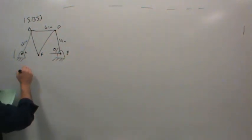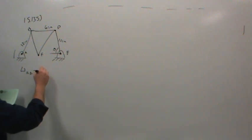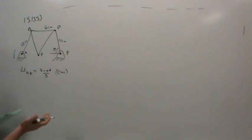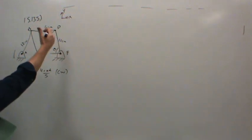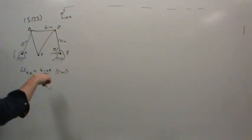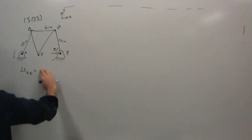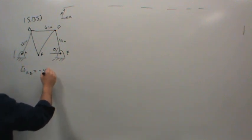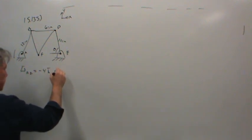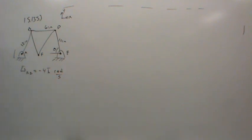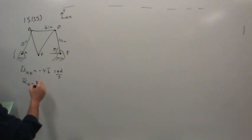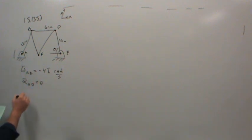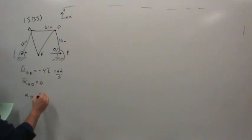We were told that the angular speed of body AB is 4 radians per second clockwise. We could write this as a vector: if we have a regular coordinate system with X into Y giving Z out, and this is a clockwise rotation, that means Z into the board. So we write this as negative 4k radians per second. Since it's a constant angular speed, the angular acceleration of body AB is zero. We'd like to know the angular acceleration of DE and the acceleration of point F.